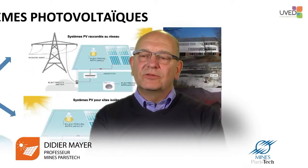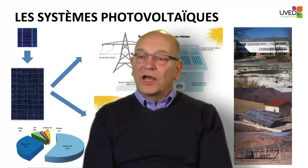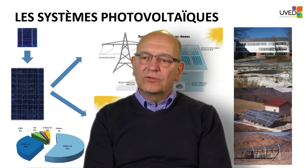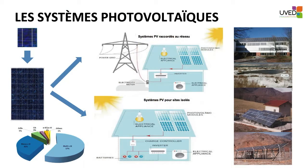Photovoltaic modules are the basic element of photovoltaic systems. A solar generator is made up of photovoltaic modules which are connected in parallel and series, determining the power, voltage, and current delivered by the whole system.